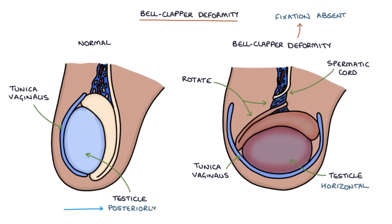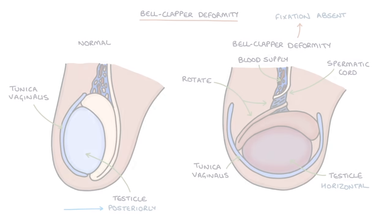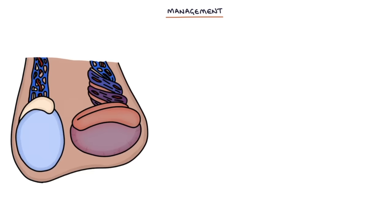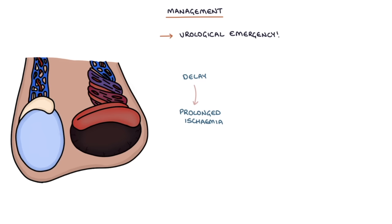As it rotates, it twists the vessels and cuts off the blood supply. Testicular torsion is a urological emergency and there's an urgent requirement for treatment. Any delay in treatment will prolong the ischemia to the testicle and reduce the chances of saving the testicle.